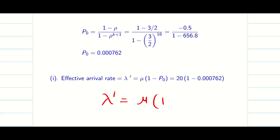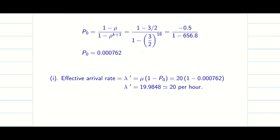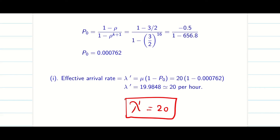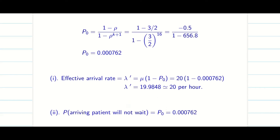The first question asks for the effective arrival rate. Lambda-dash equals mu times (1 − P₀), where mu is 20 per hour. Substituting the values, the effective arrival rate lambda-dash rounds to approximately 20 per hour.